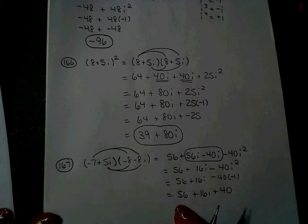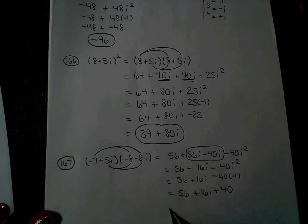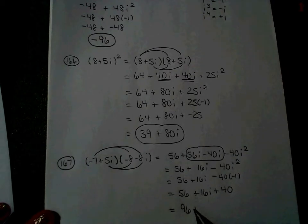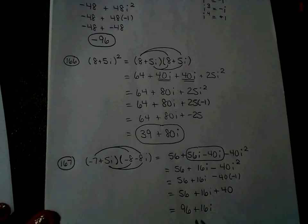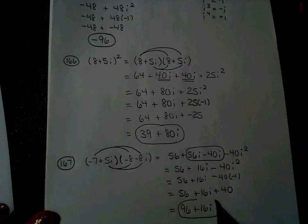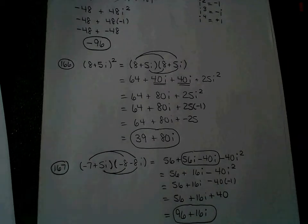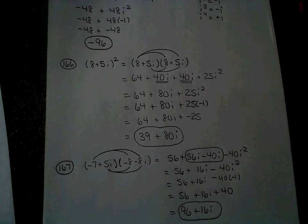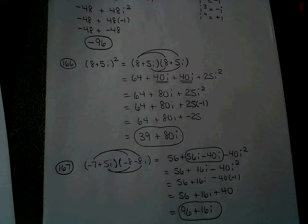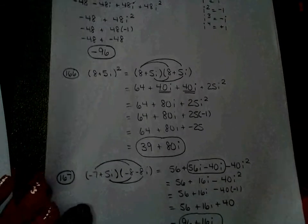56 and 40 now are like terms and they become 96, and I always write the real number part in front of the imaginary part. So the answer to this problem is 96 plus 16i, and that is another FOIL problem. When you look at your packet, 168, 169, 170, and 171 are all FOIL problems. I'm going to leave you to do those on your own.